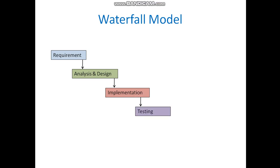After implementation, testing starts. Different types of black box testing as well as white box testing are performed, and we can call this phase a verification and validation phase. Once the fully tested product is ready, the final stage is deployment and maintenance. Deployment is nothing but handing over or installing that particular product on the client site, and maintenance comes after that.